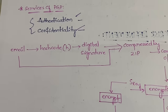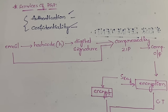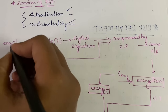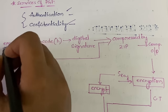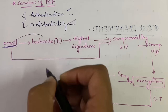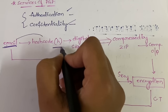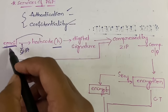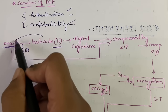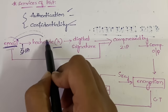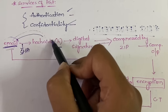This is the generalized procedure applicable to any of the cases. First, our email — whatever we have typed or are willing to send — will be converted into a hash code, denoted by H. This is done using a hashing algorithm such as SHA.